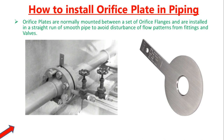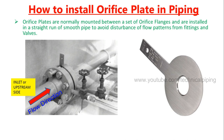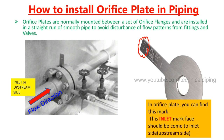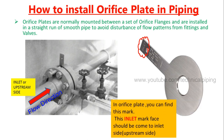This pictorial view clearly explains the installation of the orifice plate between the orifice flanges. On the orifice plate, you can find an inlet marking. At the time of installation, this inlet-marked face should face the inlet side. Based on the pipeline flow direction, you can finalize the inlet of the orifice plate.